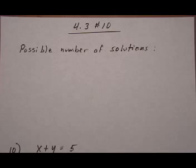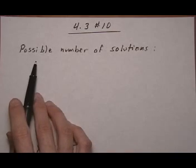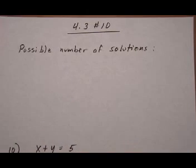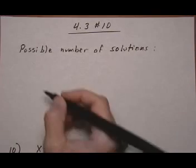4.3 number 10. Here we're going to solve a system of equations again, but before we do that, I want to talk briefly about how many number of solutions we can expect to get from a system. So we really have three possibilities.